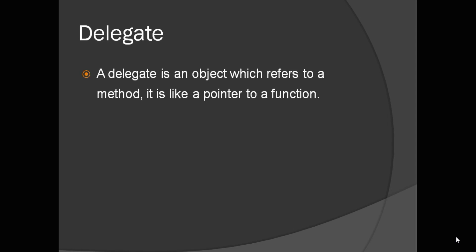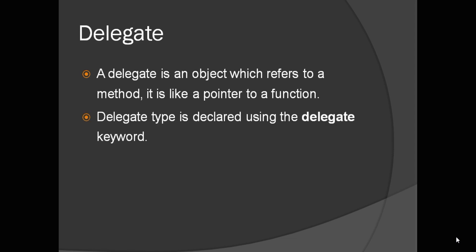So what is a delegate? A delegate is an object which refers to a method — it is nothing but a pointer to your function. Normally when we define an object it refers to an instance of a class, but a delegate is also an object that instead of referencing a class instance refers to a method. So sometimes it is also called a pointer to a function.